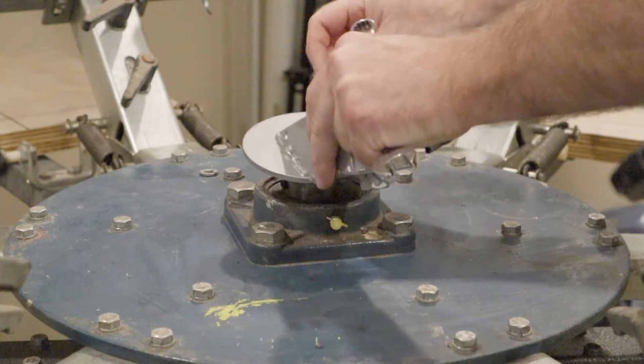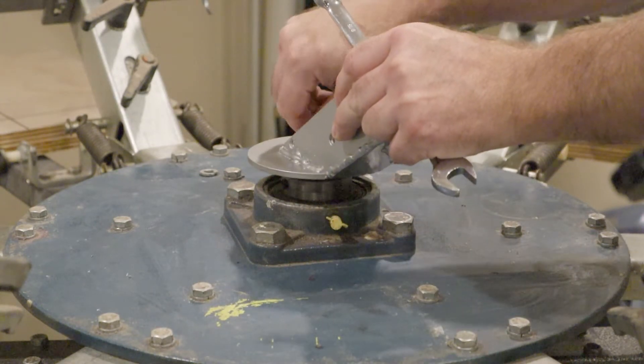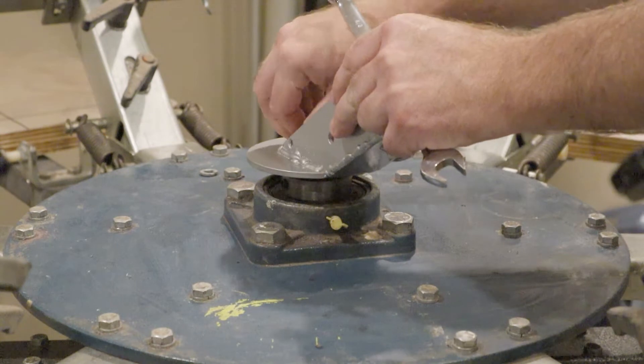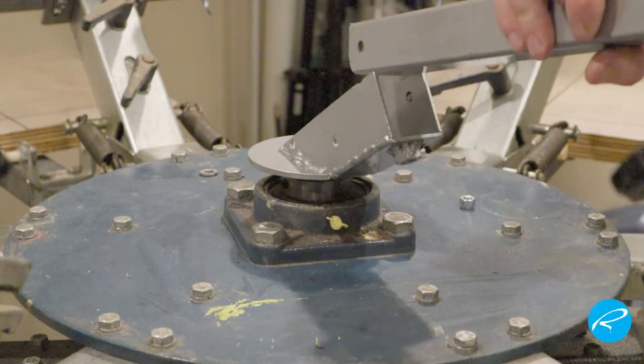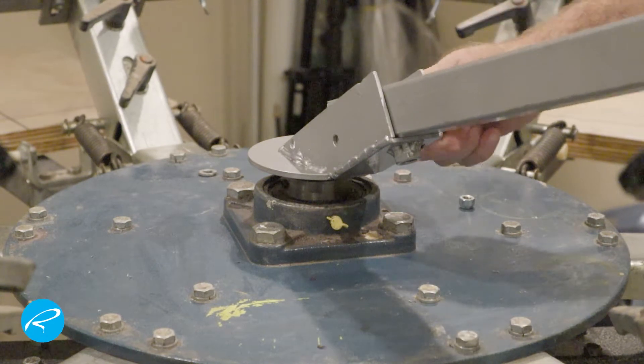Now I can start the assembly. First I put the bracket onto the press. Then I install the first tube and put the pivot bolt through.